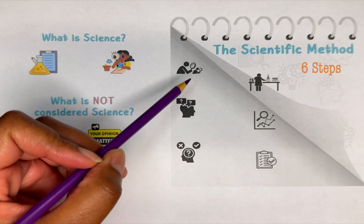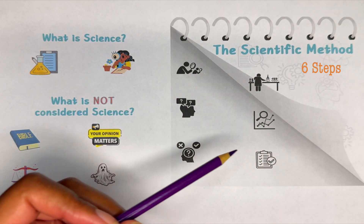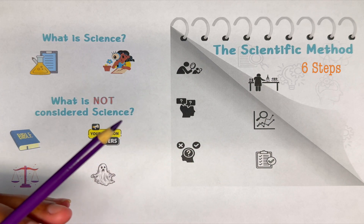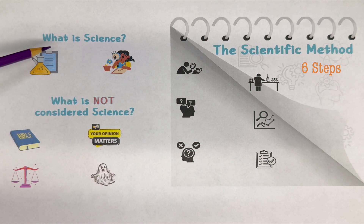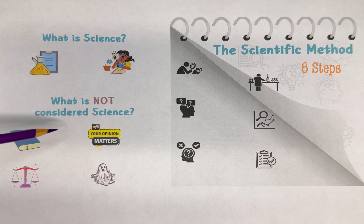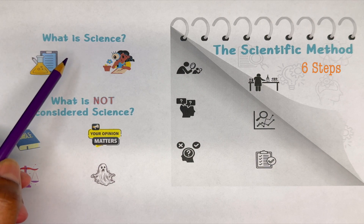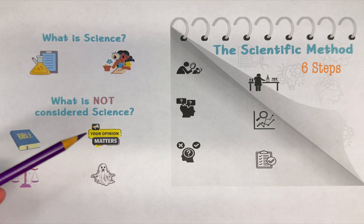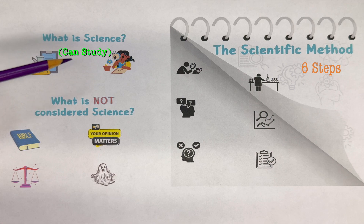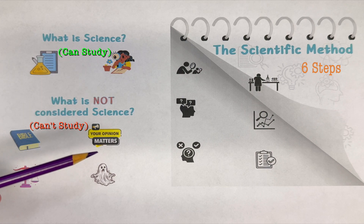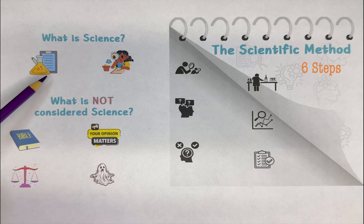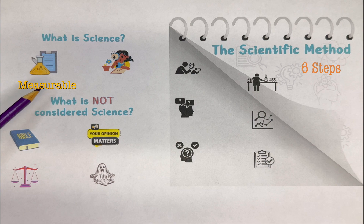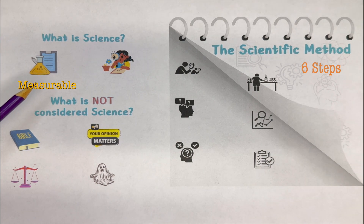Before we get into the six different steps of the scientific method, let's first talk about what is science and what is not considered science — more or less what science will study versus what it is not really interested in studying. When it comes to what is science, we like things that we can measure. If you can't measure it, science really isn't interested in studying it.